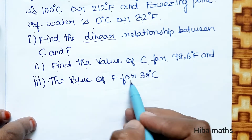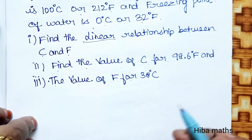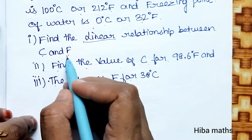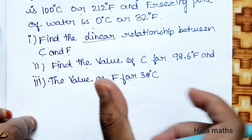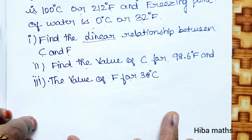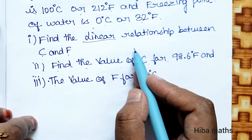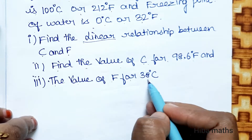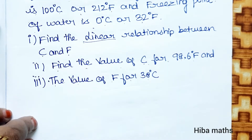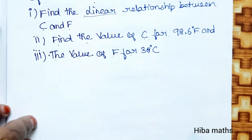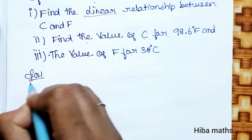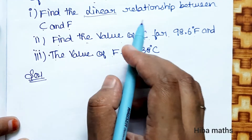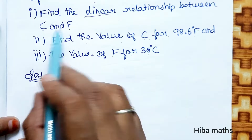and the value of F for 38 degree Celsius. So we need to find the linear relationship — that is, the equation relating C and F. We have to find the equation where we substitute C and F values, and find the solution points using the linear equation of C and F.